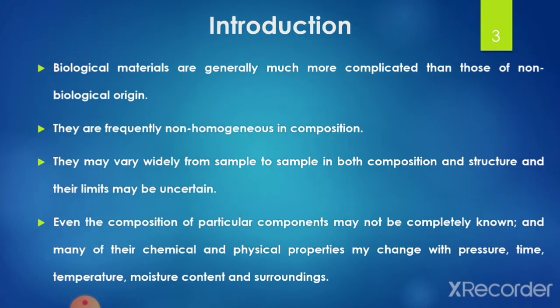Before studying these properties in detail, we will start with the introduction — why there is importance in studying the thermal properties of agricultural produce. The nature of biological materials is generally much more complicated than those of non-biological origin. They are frequently non-homogeneous in composition and may vary widely from sample to sample in both composition and structure. Even the composition of particular components may not be completely known, and many of their chemical and physical properties may change with pressure, time, temperature, moisture content, and surroundings.